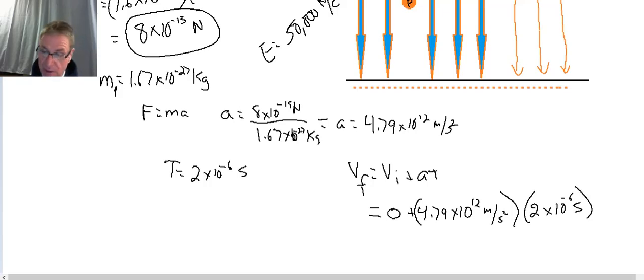And when we do this math, what we get is 9.58 times 10 to the 6th meters per second. So that's how fast our proton will be going after just 2 times 10 to the minus 6 seconds.